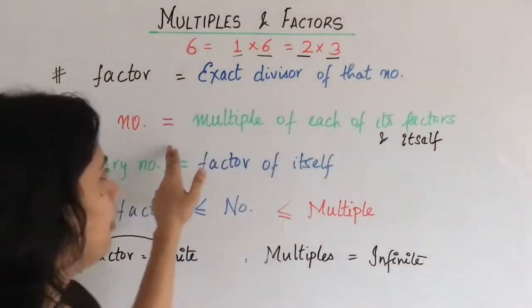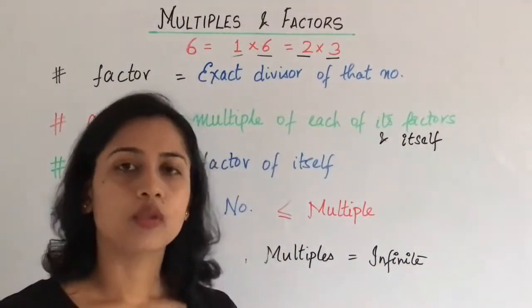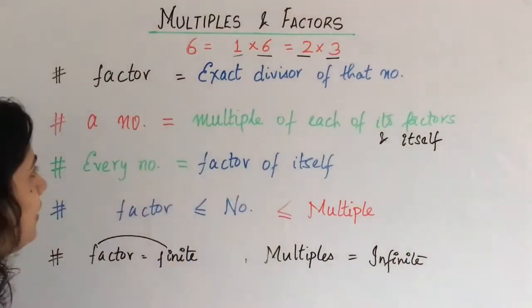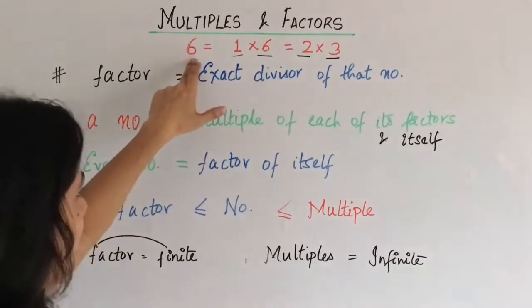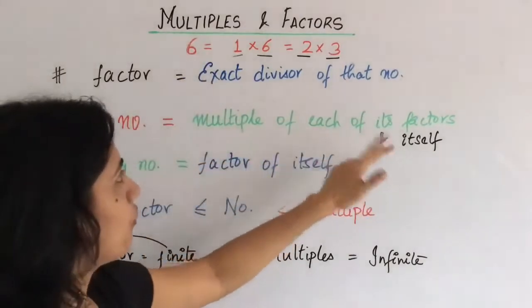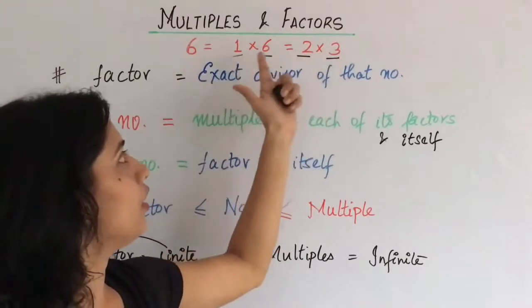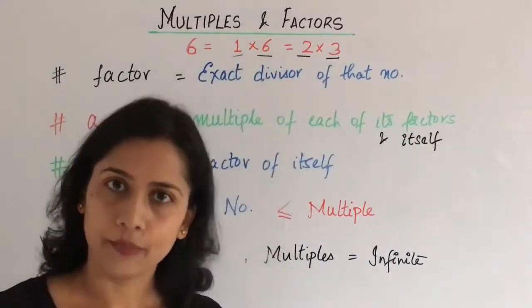Next is, a number is a multiple of each of its factors and itself. Yadhi hum same example lete hai, toh 6 is a multiple of each of its factors. That means, 6 kya hai - 2, 3, 1, or 6. In sabi ka kya hai, multiple hai, yes or no?